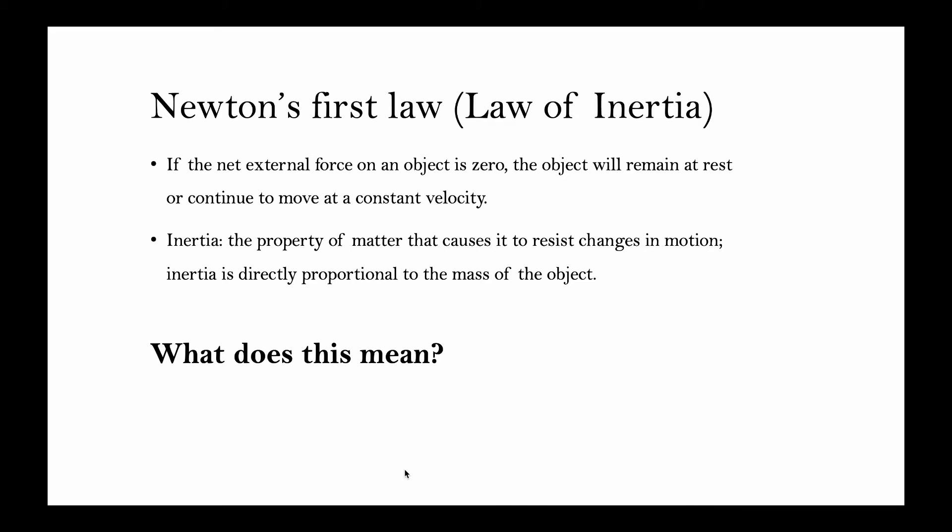Law of Inertia: if the net external force on an object is zero, the object will remain at rest or continue to move at a constant velocity. Inertia is the property of matter that causes it to resist changes in motion, and inertia is directly proportional to the mass of the object.